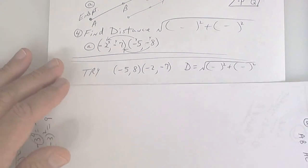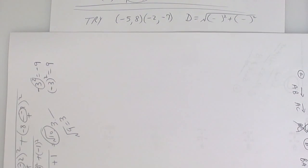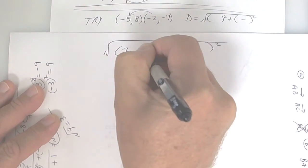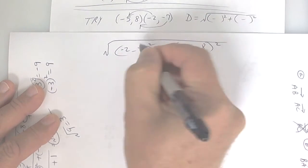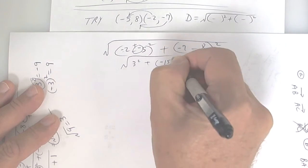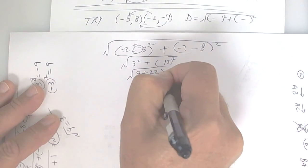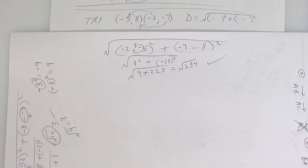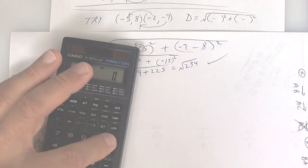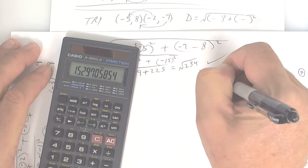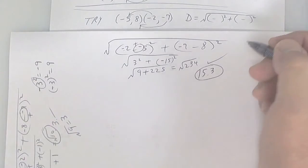Let's try one more distance formula on a new sheet of paper. We'll work backwards: negative two and negative five, then negative seven and eight. This becomes a plus, so five minus two is three squared. This becomes negative fifteen squared, which is 225, so it's nine plus 225, which is 234 — the square root of 234. On your calculator press 234, shift, square root, and you should get 15.3. Make sure you can do that; all calculators are a little different, so let me know if you need help.